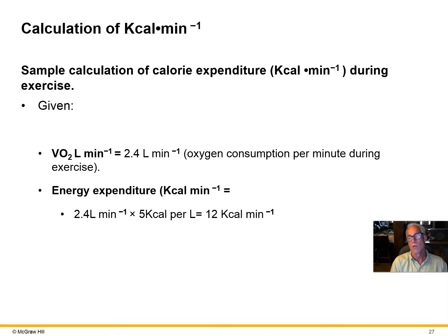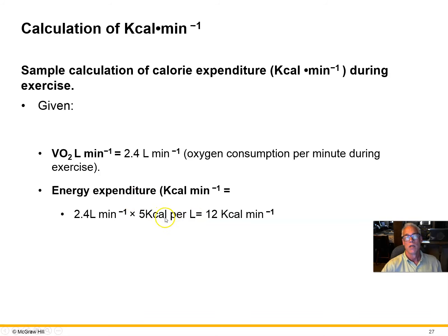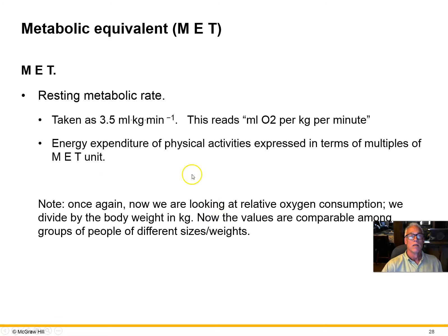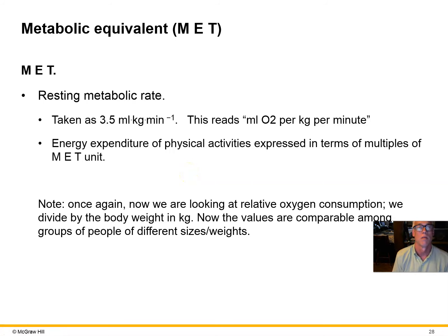Another practical thing we can do is relate oxygen consumption to something more familiar — like how many calories are we burning? Are we going to lose any weight during this activity? We can convert liters per minute of oxygen consumed into kilocalories per minute by a simple conversion: every liter of oxygen equates to 5 kilocalories consumed in the body at the energy cost of the exercise.